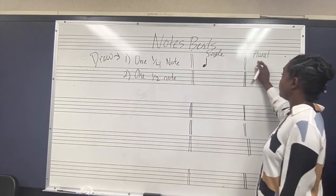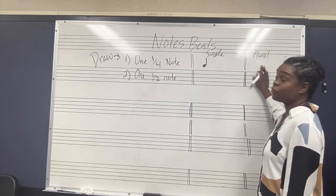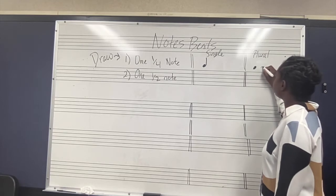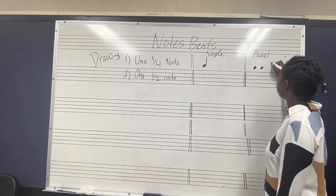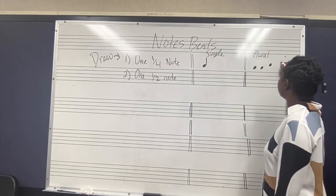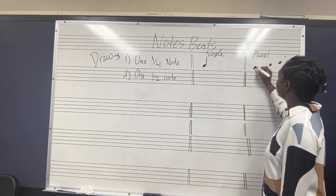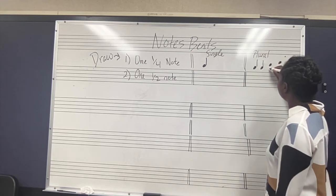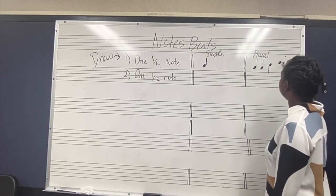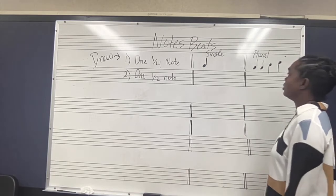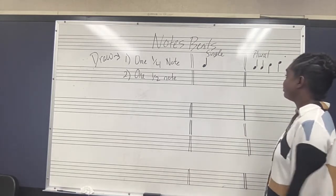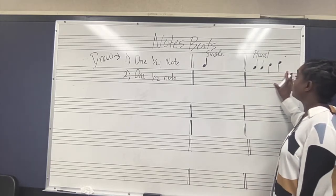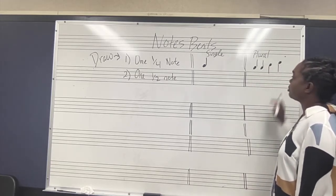Now, if I have more than one — if I have a plural amount of quarter notes — it would look more like this. So maybe I have one, two; I think that looks like it's above that B line, so we're going to do that. Something like that, which you see all the time in music.